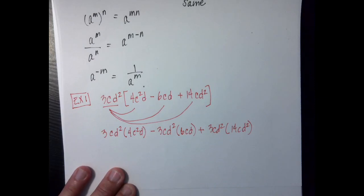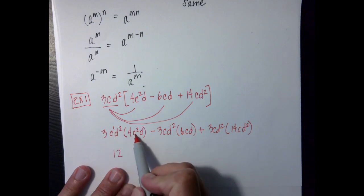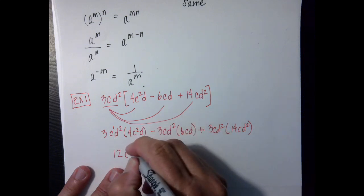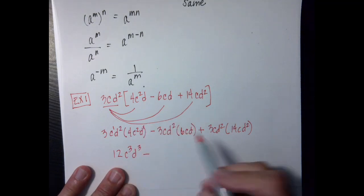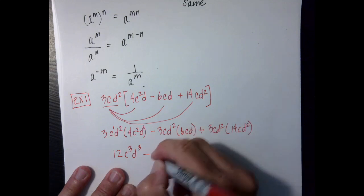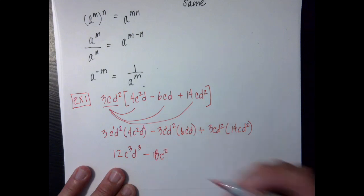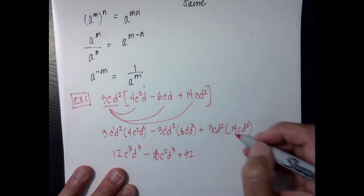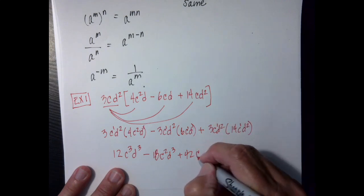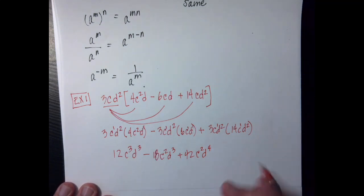Remember that like things play together. So 3 times 4 is 12. This is c to the 1; c to the 1 times c to the 2nd is c to the 3rd. d to the 2nd times d to the 1st is d to the 3rd. Then I'm going to have minus — 6 times 3 is 18 — c to the 1 times c to the 1 is c to the 2nd, and then I get d to the 3rd. And then plus — 3 times 14 is 42 — c to the 1 and c to the 1 gives c to the 2nd, and d to the 4th.